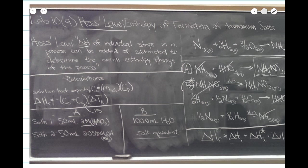There are some calculations you're going to need to know. You need to know the solution heat capacity, C_s, which is equal to the mass of the solution times the specific heat capacity C_p. You also need to know ΔH of the reaction, ΔH_r, which is equal to negative (C_s + C_c) times ΔT. We'll do ΔT in Kelvin because C_c is equal to the calorimeter constant.